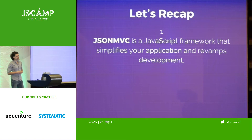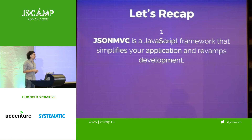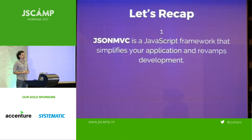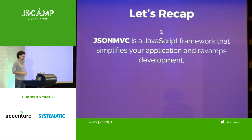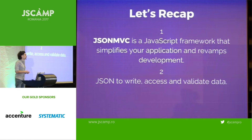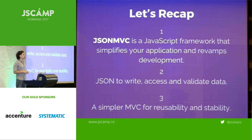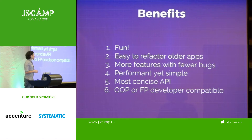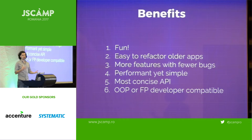So let's recap. JSON-MVC is a JavaScript framework that simplifies your application and revamps development. It's not an improvement on the current model — it completely changes the way we build applications. It uses JSON, the most versatile and robust data management system, to write, access, and validate data in a single system. It proposes a new MVC postulate that increases reusability and stability. The benefits I've seen in the past year: it's fun. The way you use it is — change state, change data, change controllers and models until you get to the right product.